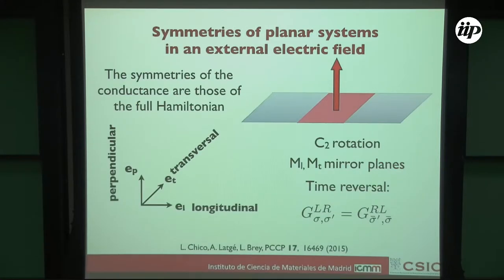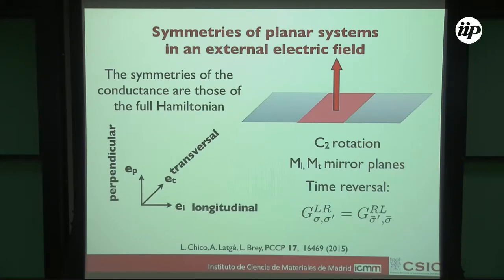Imagine you have a planar system: a flat piece of material with an electric field as one privileged direction. What symmetries does this thing have? I can think of three: a 180-degree (C2) rotation, a mirror plane along the ribbon, a mirror plane perpendicular to the ribbon, and also time-reversal symmetry. Let us see if just by symmetry reasoning we can deduce some properties of this system.